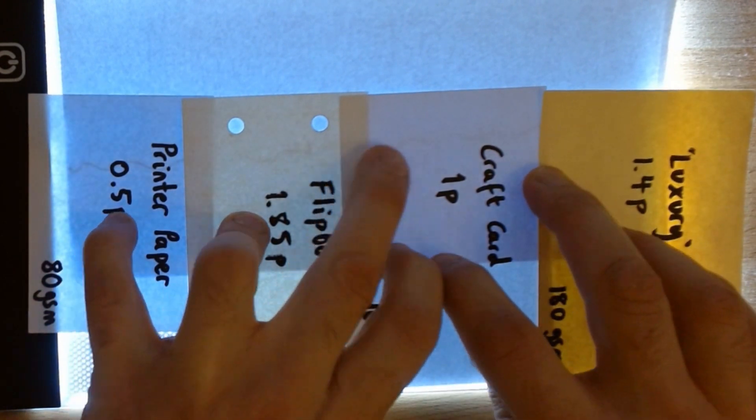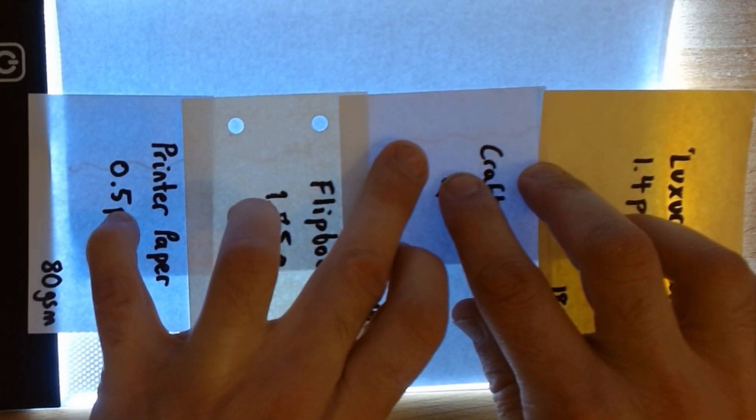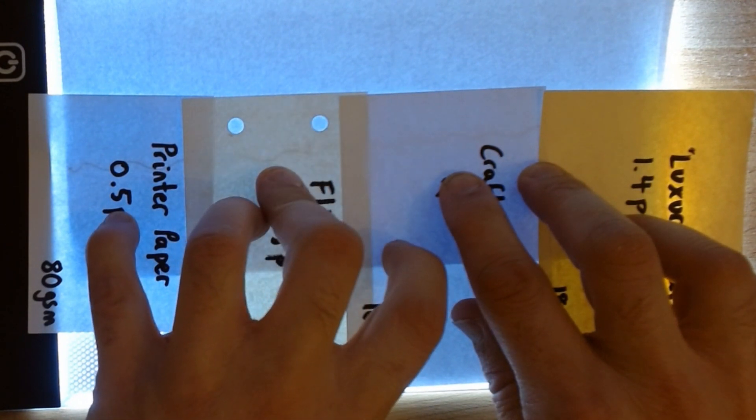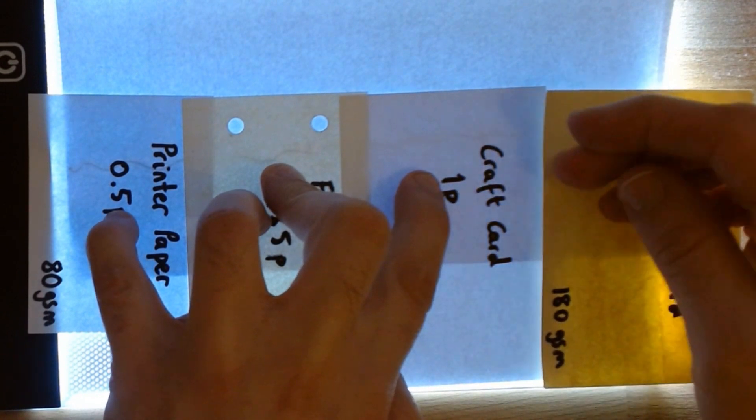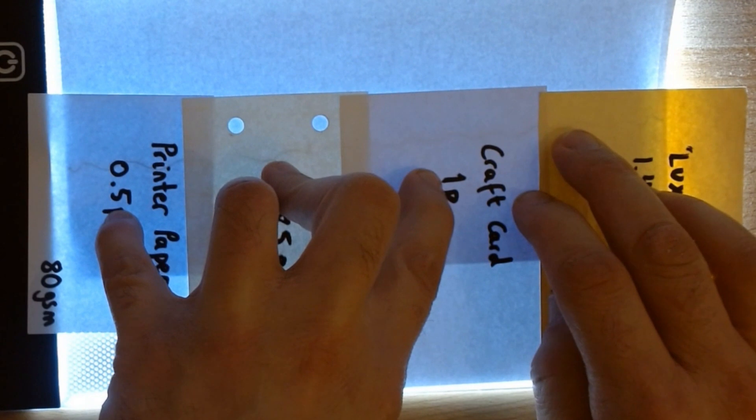you can see the line here, you can see how it's really clearly visible through the thin paper, and then as the paper gets thicker, it gets progressively harder to see. The two in the middle are 120 and 160 gsm, and they're pretty similar.